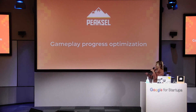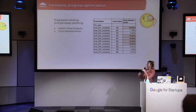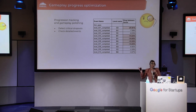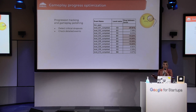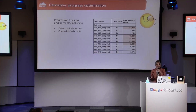Now I will show you how we optimize gameplay progress. First, we detect critical dropouts and check detailed events. We got a report like this after launch from our data team, and the numbers marked red are the detected critical dropouts. As you can see, in the first level, that dropout rate was 28%. Now I will show you how we fix it.